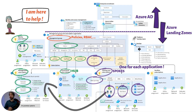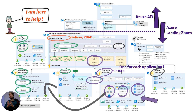We also have sandbox subscriptions — these are usually isolated environments focused on testing and learning without production data. As you can see, there is no peering between these and the connectivity subscription. Dev and test environments don't fall into the sandbox category, as they are there to test and develop new features to be pushed to the production environment. Dev and test are usually split into different subscriptions and also fall under the application landing zones, with limited access to production data and connectivity to on-premise for application functionality.